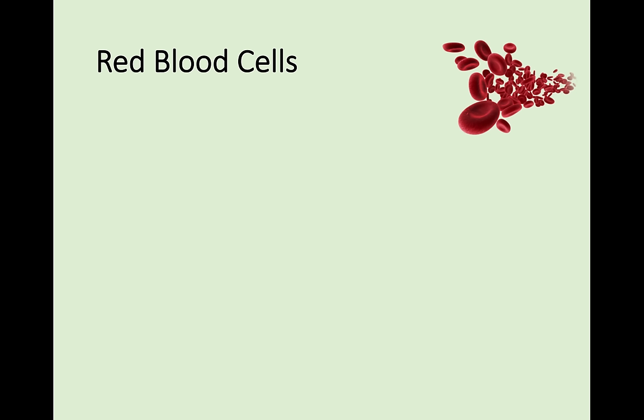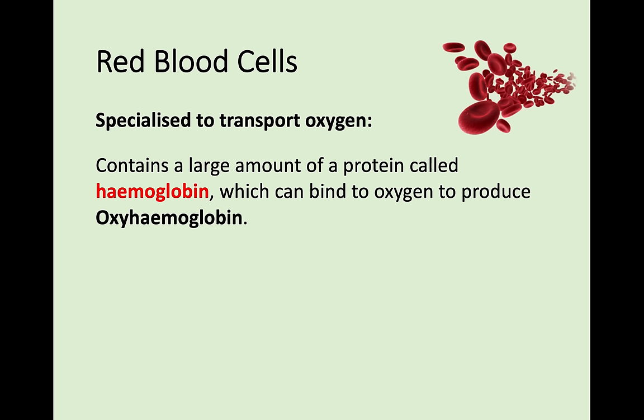First of all, red blood cells - these are the red part of your blood. The function of a red blood cell is that they are specialised to transport oxygen. Red blood cells have a protein called haemoglobin, and when haemoglobin binds to oxygen it produces oxyhaemoglobin. That oxygen can then be transported all around the body by binding to haemoglobin - try and remember those terms, that's quite important.